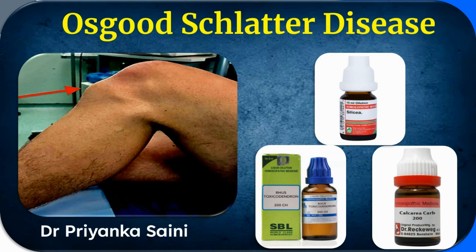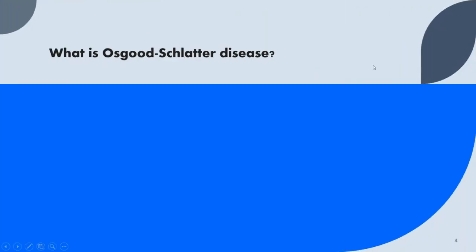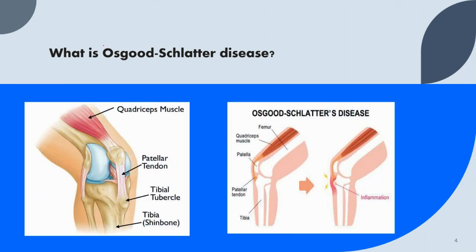Let's talk about what exactly Osgood-Schlatter disease is. It is a common cause of knee pain in growing children and young teenagers. It is characterized by inflammation in the area just below the knee, where the tendon from the kneecap attaches to the shin bone, that is the tibia.